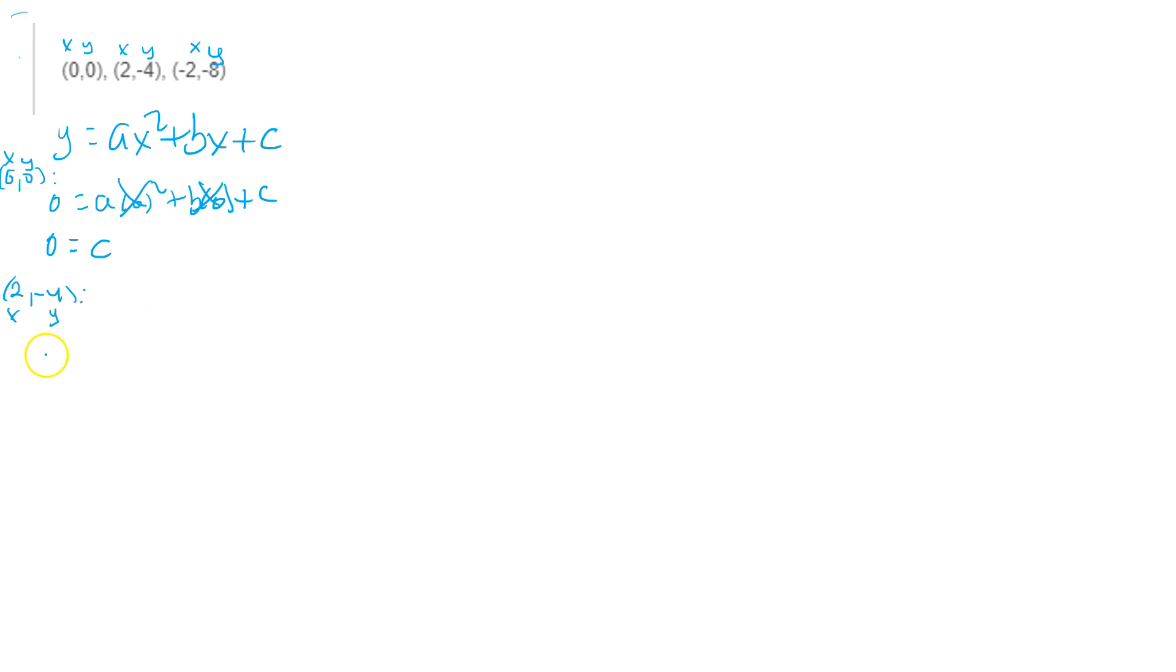So you get the following here, take a look. It will say -4 equals a times 2 squared plus b times 2. And remember that from the equation above right here, we see that c equals 0, so you put plus 0 here. You don't even need to really put that.